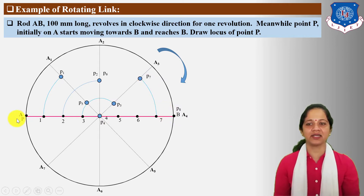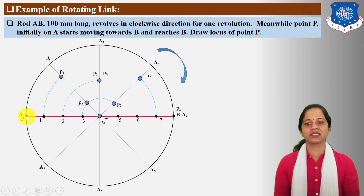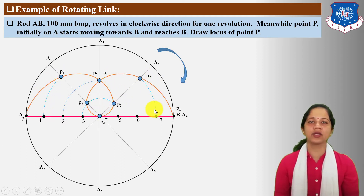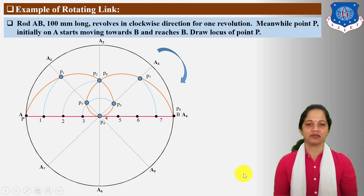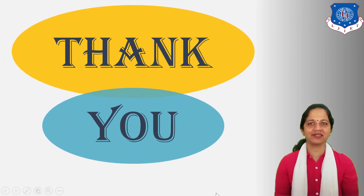At last, at the 8th position of the road, it covers 100 mm distance and reaches point B. This B point indicates locus P8. Connect all locus points freehand in the form of a curve. This indicates the locus of point P for one complete revolution of AB road. This is the end of this session. See you soon in the next coming video lecture. Thank you.